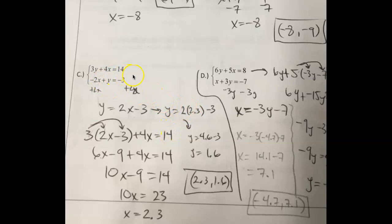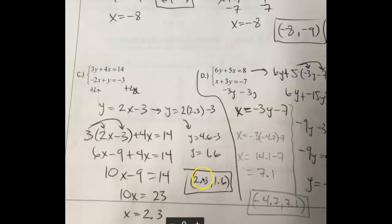I take the value 2.3 and plug it into one of the original equations — the y equals 2x minus 3 equation — plug in 2.3, and figure out y equals 1.6. I recommend using a calculator. Write your answer as x comma y: 2.3 comma 1.6. I'd also recommend plugging these values back in: 2.3 for x and 1.6 for y into the top equation. 3 times 1.6 is 4.8, 4 times 2.3 is 9.2, and 4.8 plus 9.2 actually is 14, so that works.